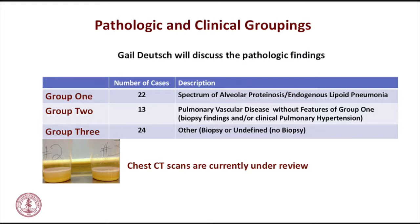The BAL can show profound proteinosis — lung washing should not look like caramel. It's a spectrum of alveolar proteinosis and endogenous lipoid pneumonia. The second group is pulmonary vascular disease — either seen on biopsy without alveolar proteinosis, suggesting vascular injury, or children clinically diagnosed and treated for pulmonary hypertension. The third group includes those without biopsy, a different biopsy pattern, and no pulmonary hypertension. Those calling this PAP without biopsy and without pulmonary hypertension would have membership in group three.